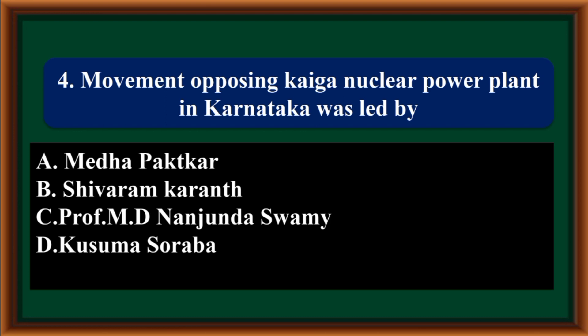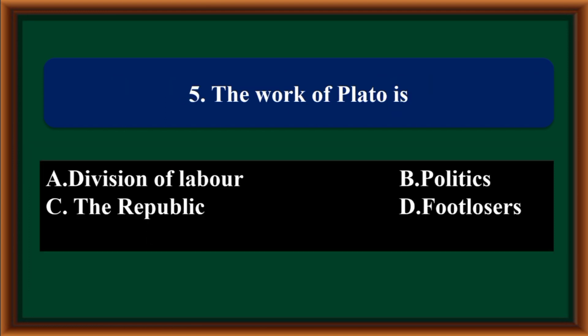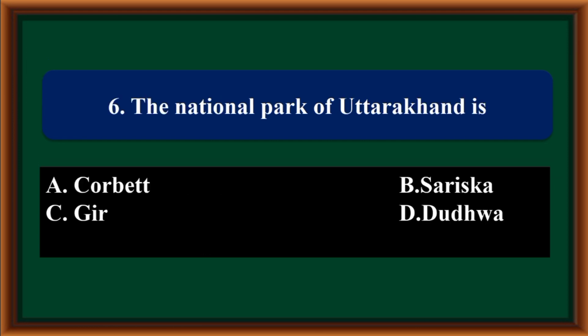The correct answer is option B, Shuram Karant. The work of Plato is: Division of Labor, Politics, The Republic, or Footloose. The correct answer is The Republic. The national park of Uttarakhand is: Corbett, Sariska, Gir, or Dudhwa. The correct answer is option A, Corbett.